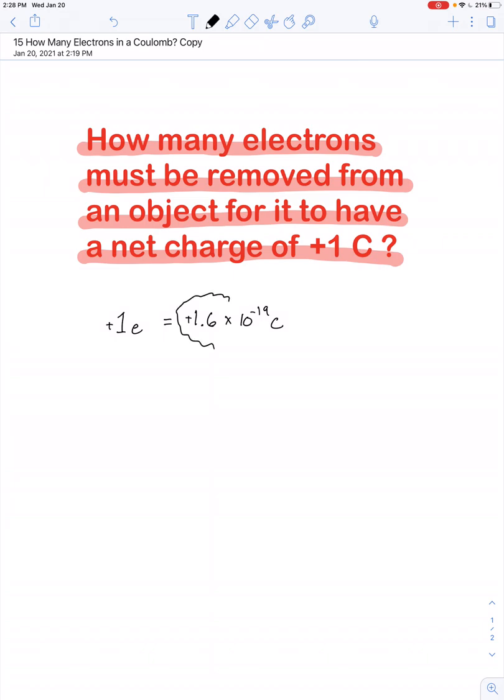You generally don't get a charge of positive 1.6 times 10 to the negative 19th coulombs by adding a proton because it's very hard to transfer protons from one object to another due to the fact that they're bound in the nucleus. So you create a positive fundamental charge by removing one electron. That's the nature of this question.